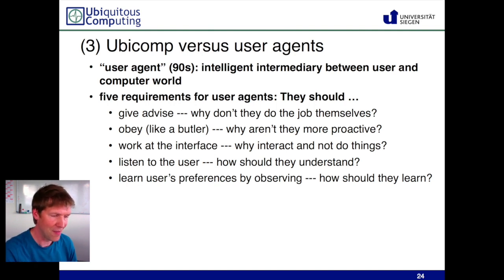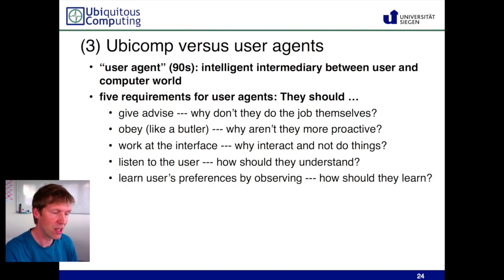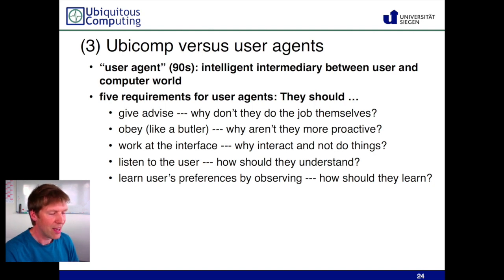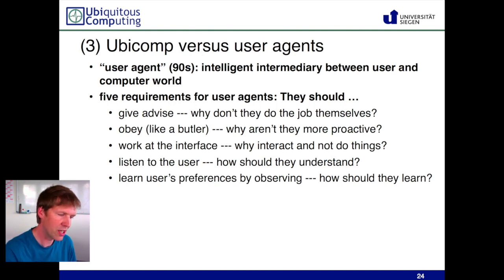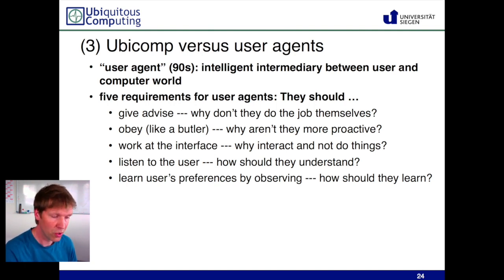Mark Weiser's answer to that was: why don't they just save the document in a temporary file? This does not require user interaction and should not. Another thing he found critical was that agents obey like a butler would obey. But real butlers, in his opinion, were a lot more proactive — they would not constantly disturb you asking 'shall I do this or shall I do that?' Why aren't agents more proactive and just do things?